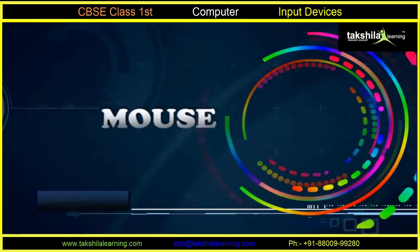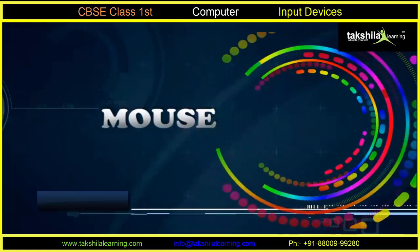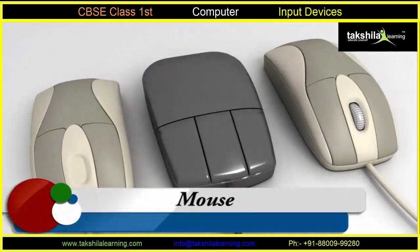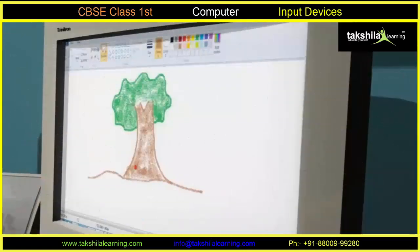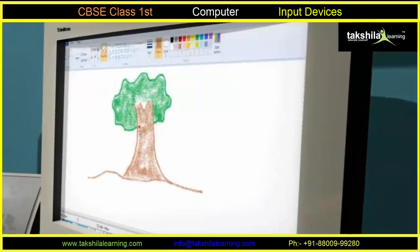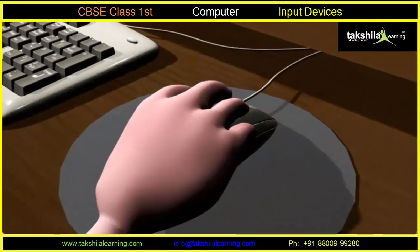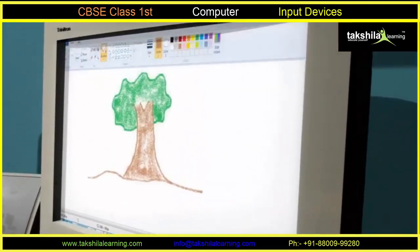Mouse. A mouse is a pointing device that is used for pointing at objects on the monitor. It is also used for drawing images. The mouse can be moved on a smooth surface to control the movement of the pointer on the monitor.